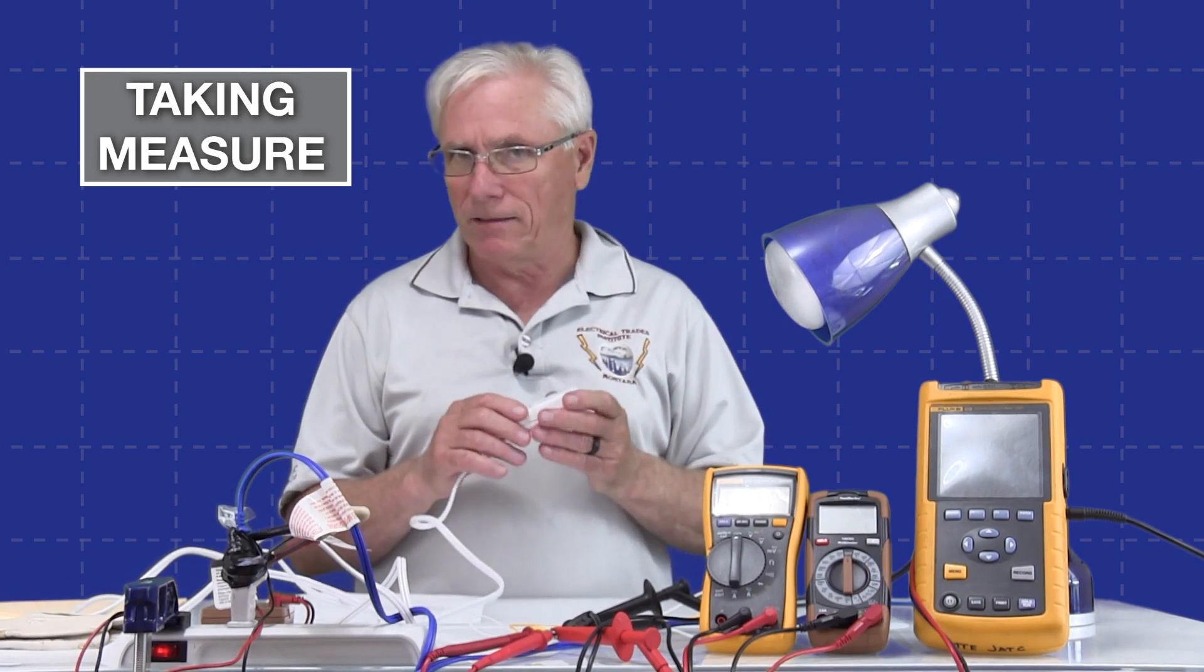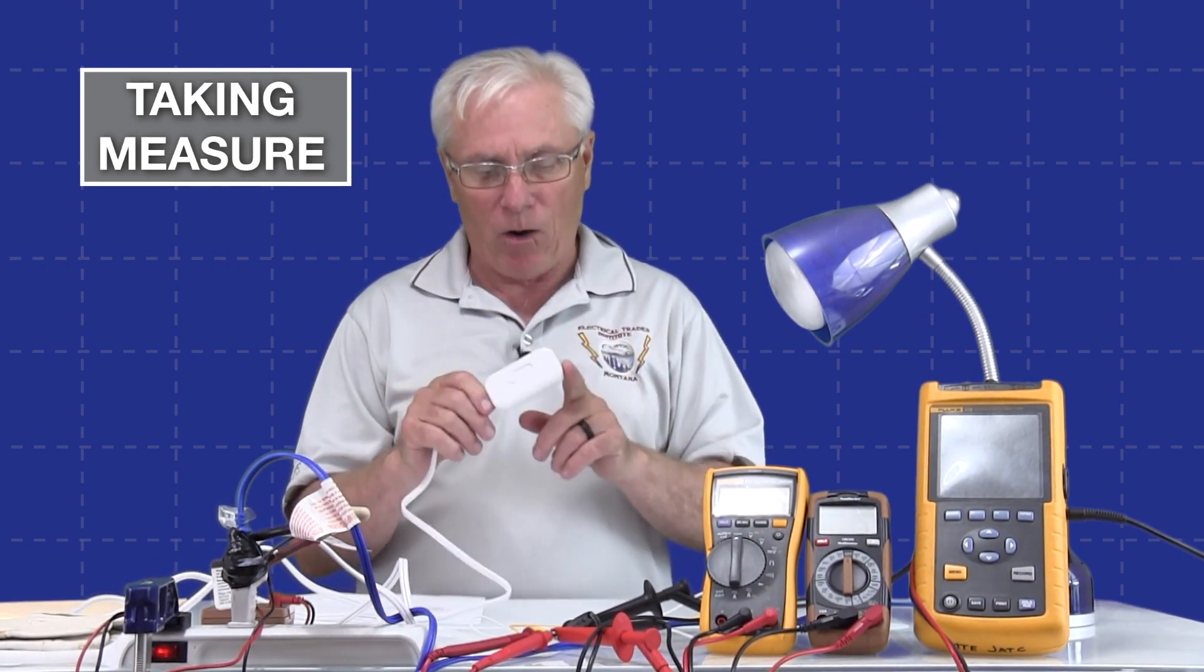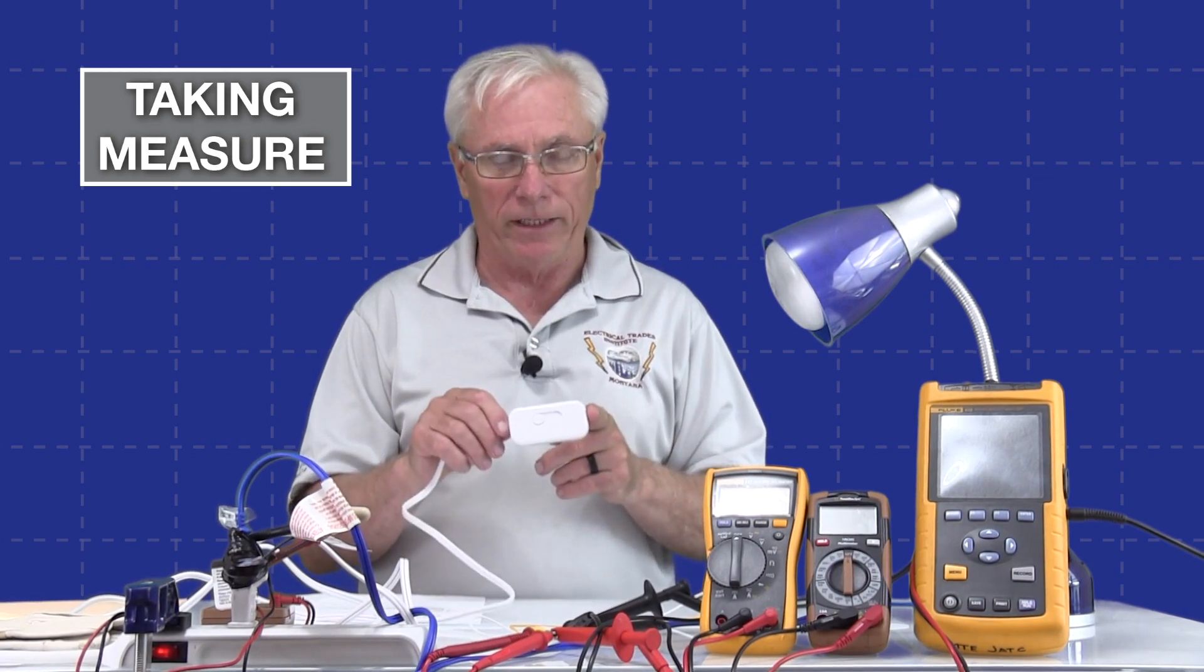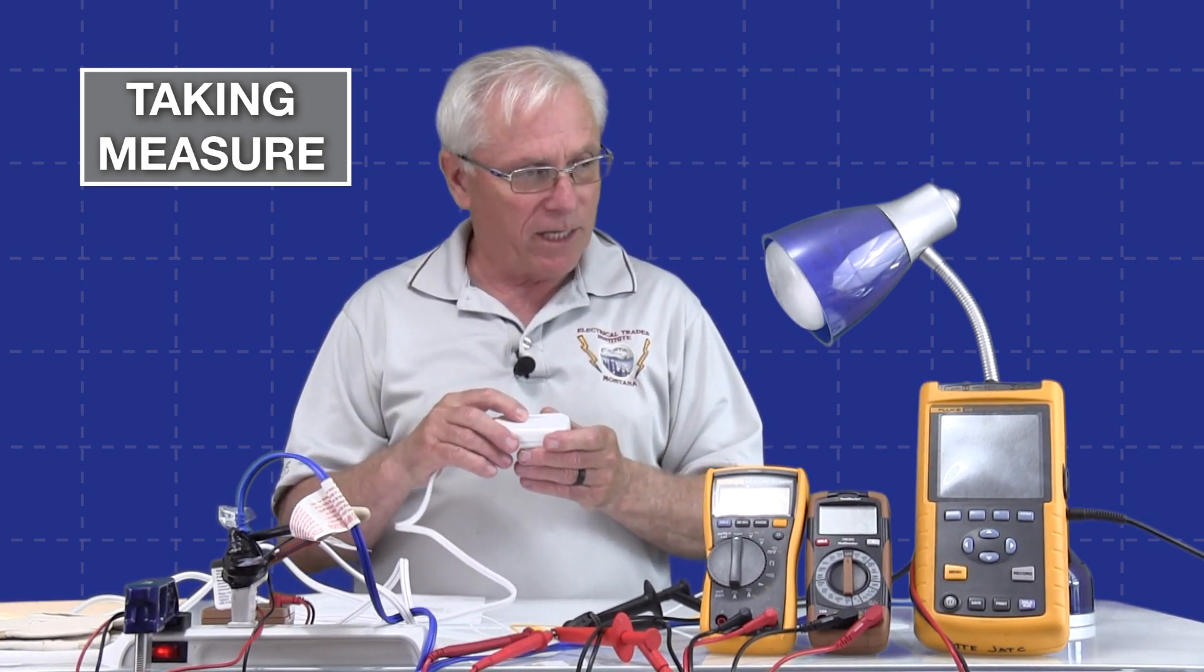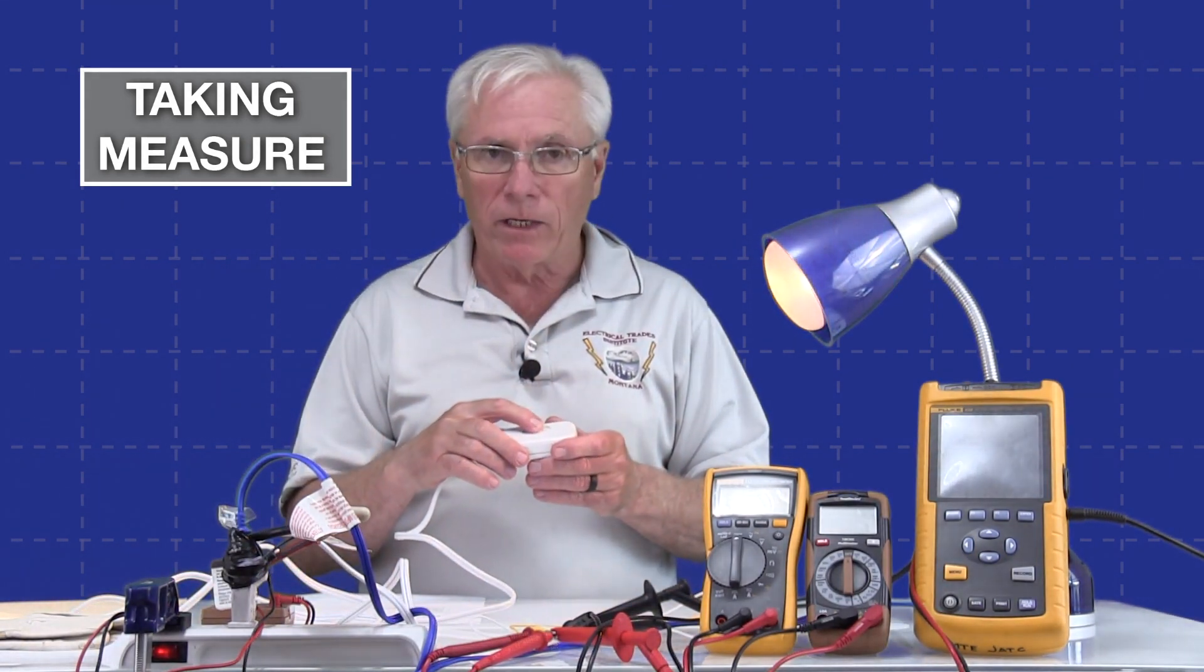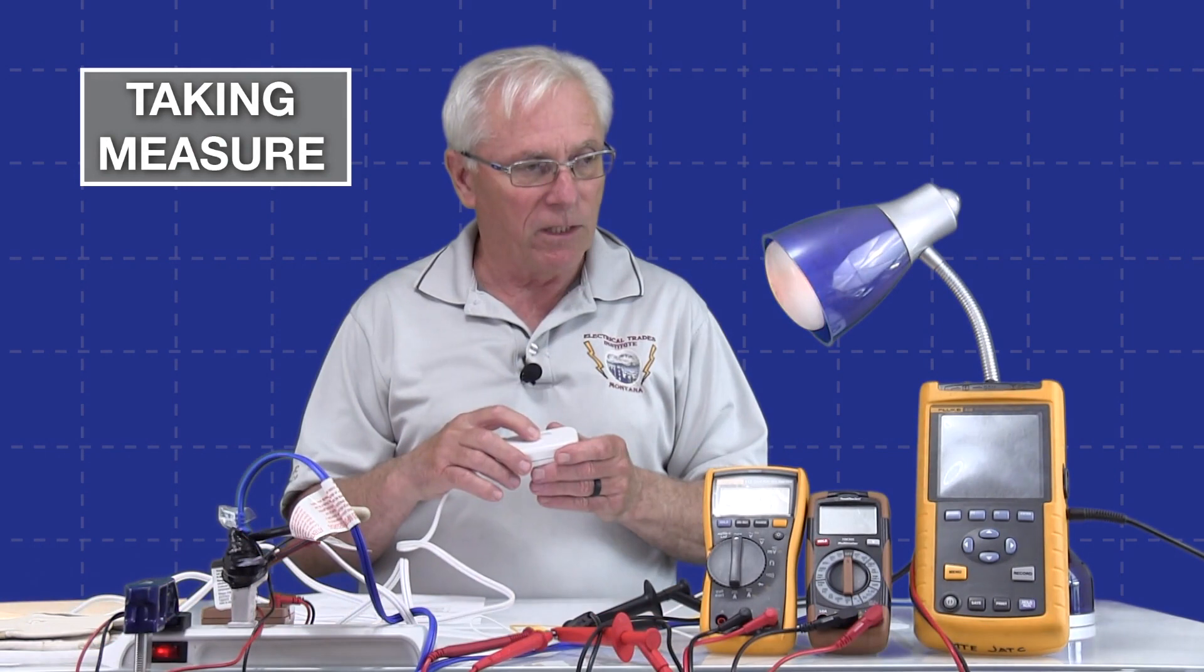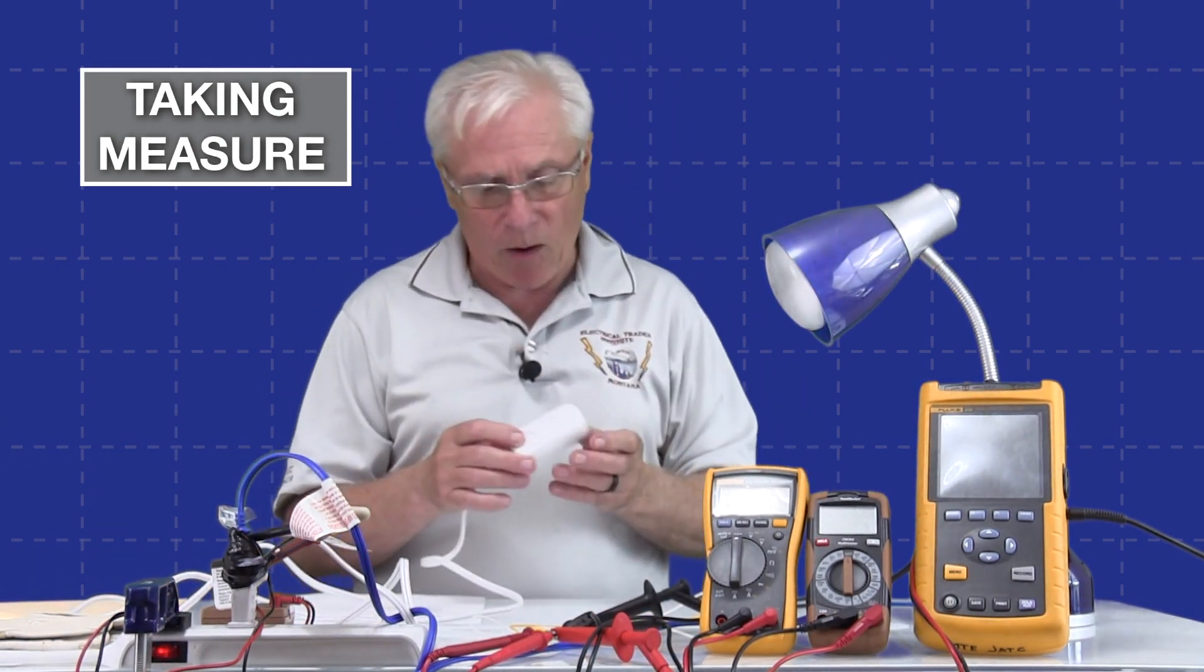I don't want to get too lost in the weeds on this, but we do need to talk about a dimmer and how it works. This particular dimmer has a triac in it, which is a solid state device used to control the circuit. Essentially, when I use this dimmer, you'll watch the light come on and you can watch it ramp down again.